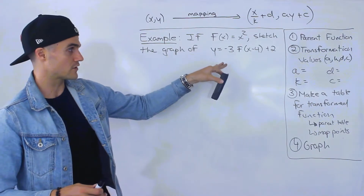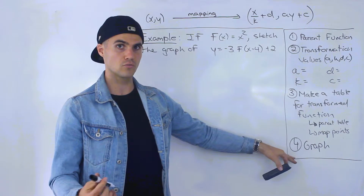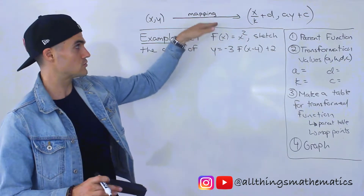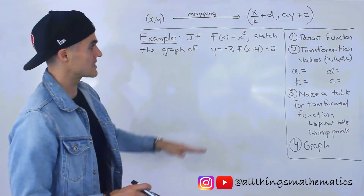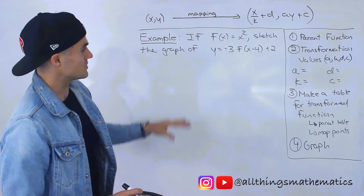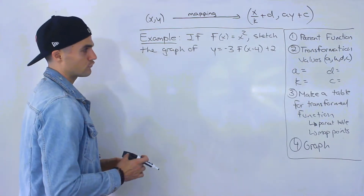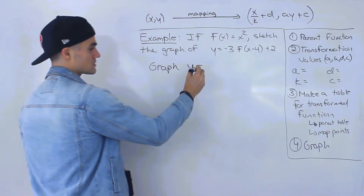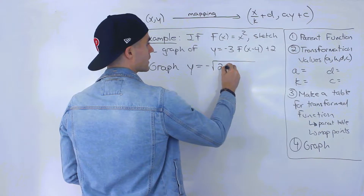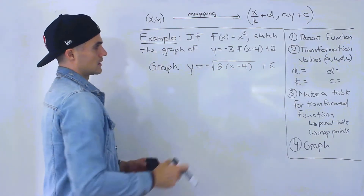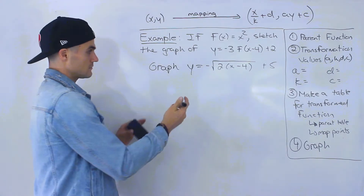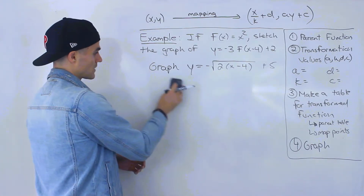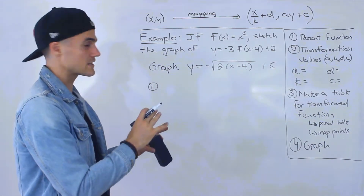To graph this function, I'm going to be following those exact same steps that I went over in the overview video. In that same video, I introduced the mapping formula, and then I went through an example where we use this mapping formula. I'm going to be going through the exact same process, except this time notice that the parent function is x squared.